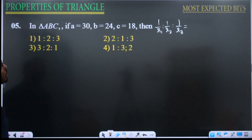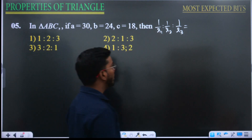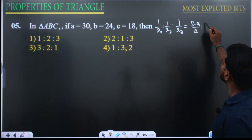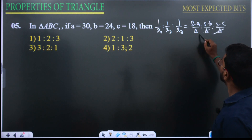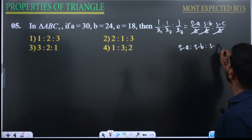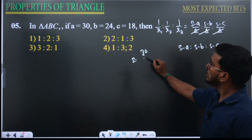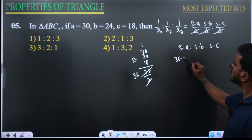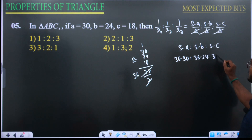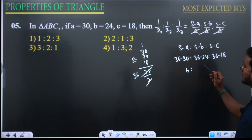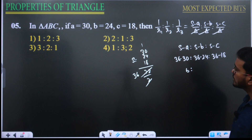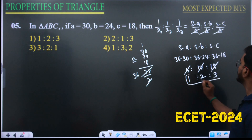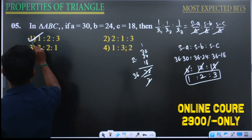Next question: a, b, c are given, find ratio 1/r1 : 1/r2 : 1/r3. We know 1/r1 equals (s minus a)/delta, so the ratio is (s minus a) : (s minus b) : (s minus c). With a equals 30, b equals 24, c equals 18: s equals (30 plus 24 plus 18)/2 equals 36. So (36 minus 30) : (36 minus 24) : (36 minus 18) equals 6 : 12 : 18 equals 1 : 2 : 3.